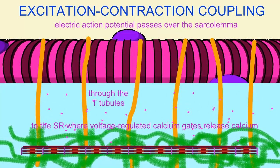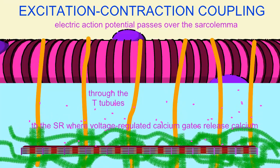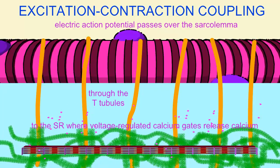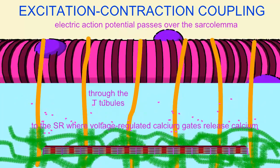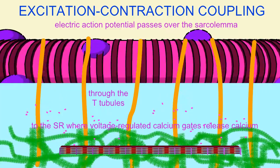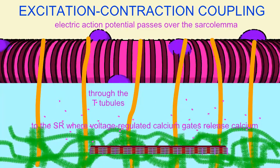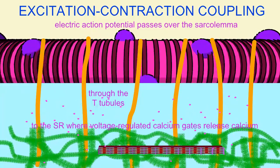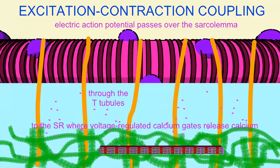Troponin moves tropomyosin away from the active sites of actin, thus allowing the contraction of the sarcomeres. Since muscle cells are composed of sarcomeres, this results in the contraction of the muscle fiber.